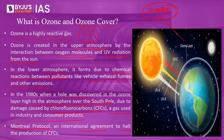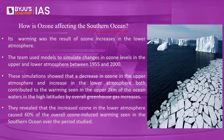Coming back to our topic: why is ozone responsible for global warming? The study says the Southern Ocean is warming because of ozone increases in the lower atmosphere. The research team used models to simulate changes in ozone levels in the upper and lower atmosphere between 1955 and 2000. These simulations showed a decrease in ozone in the upper atmosphere — where ozone is formed by interaction between oxygen molecules and ultraviolet rays from the sun — but an increase in the lower atmosphere.